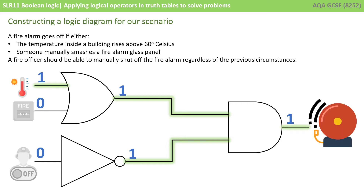Now we see the situation where the temperature has risen above 60 degrees Celsius. We've now got a one — a positive input — to our OR gate. We only need one input to an OR gate to be true for the output to be true. So now we have a one coming out of the OR gate and a one coming out of the NOT gate. The AND gate at the end is receiving two ones and therefore outputs one — the fire alarm goes off.